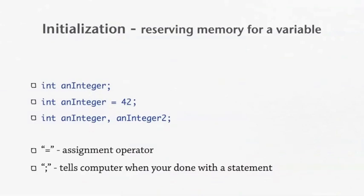Now, initialization. This is reserving memory for a variable. First off, you say the type of variable. So in this case, int, and then you do the name—an integer, semicolon. Now also, in the initialization, you can assign a number to it. So you can do int, an integer...